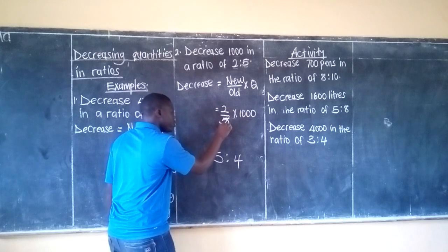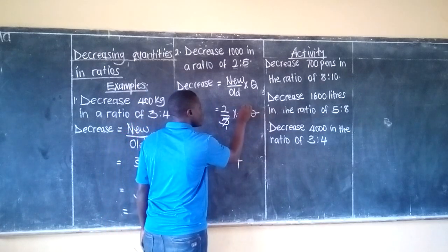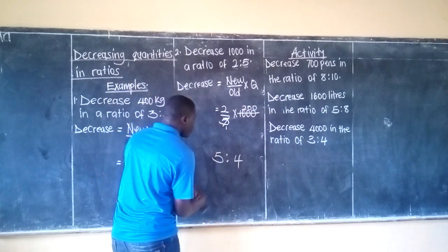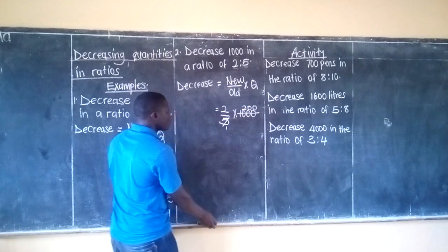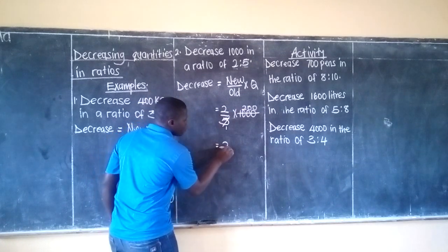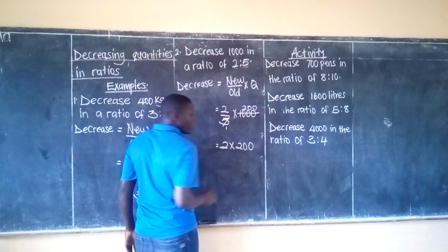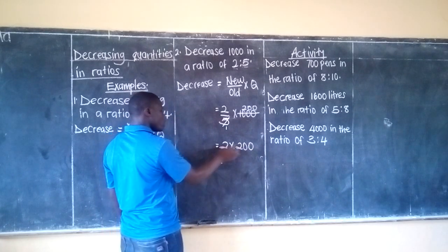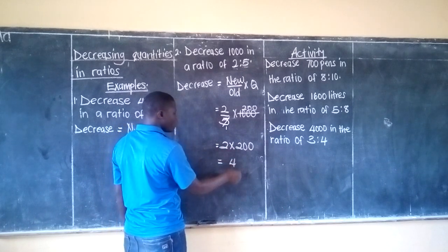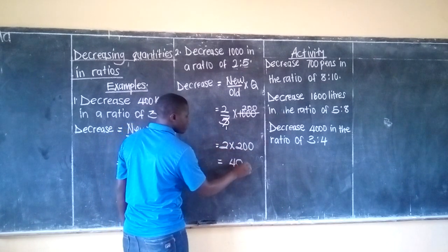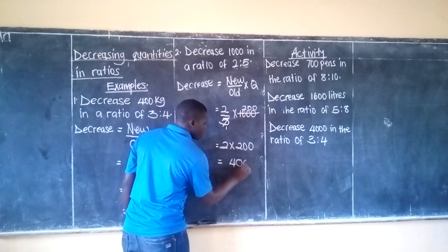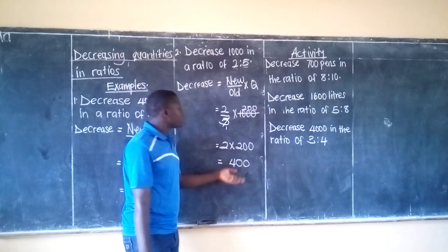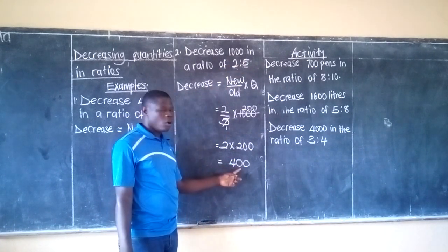At this step we divide 1,000 by 5 — by 5 you get 1, by 5 you get 200. Now we shall multiply 2 times 200. You know that 2 times 2 is 4, 2 times 0 is 0, 2 times 0 is 0. So you can see these numbers decrease from 1,000 to 400.